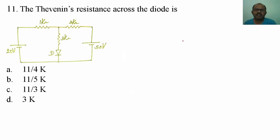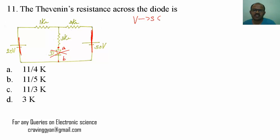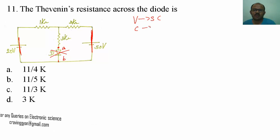You have to find the Thevenin's resistance across this diode. Let me name these terminals as A and B. In order to find the Thevenin's impedance across this diode, you have to replace active elements: if you are having a voltage source, replace it by a short circuit, and if you are having any current source, replace it by an open circuit.